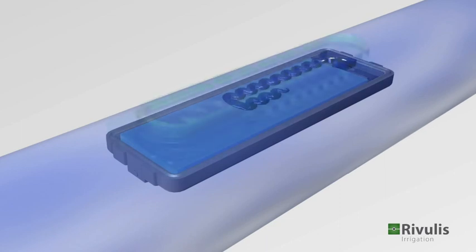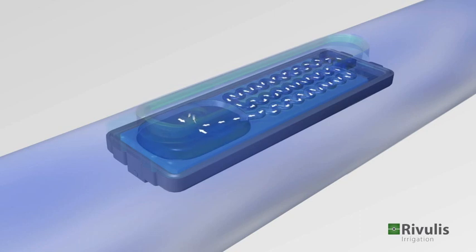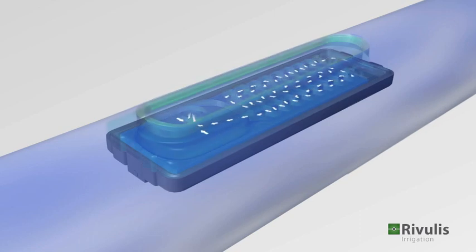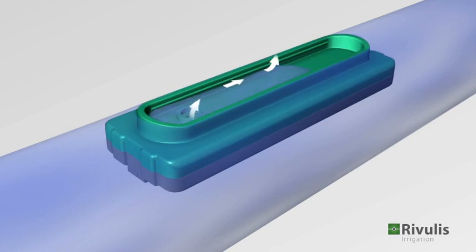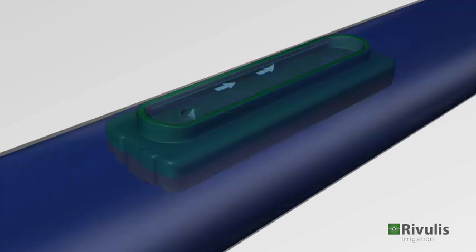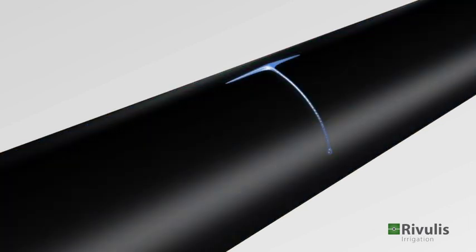From the inlet filters, the water flows into a large cross-sectional labyrinth specifically engineered to resist clogging. It then continues through the regulating chamber, which ensures that the water maintains a constant flow rate over a wide range of pressures. Only then does the water pass through the outlet chamber and drip out to irrigate your plants.